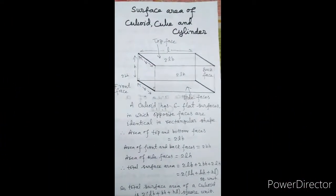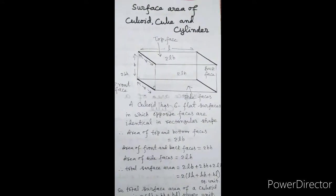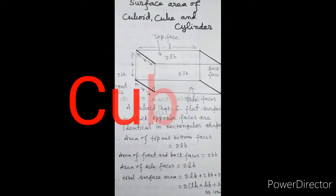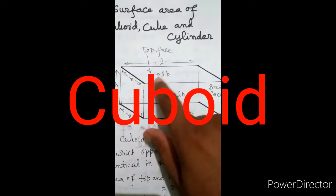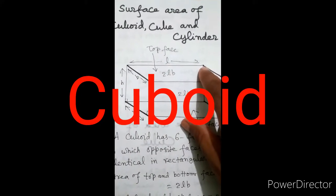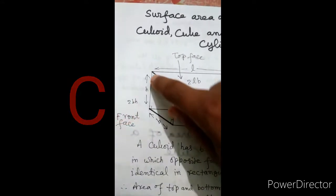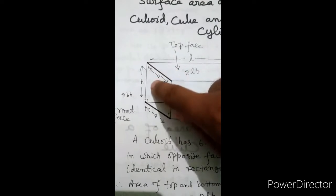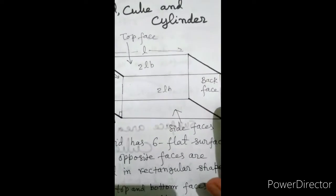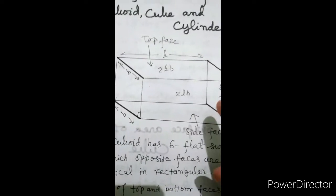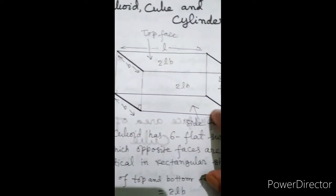As we know, a cuboid is a 3-dimensional shape. Here, L is its length, this part is its breadth B, and this part is its height. We observe here that this geometrical shape has 6 rectangular faces.